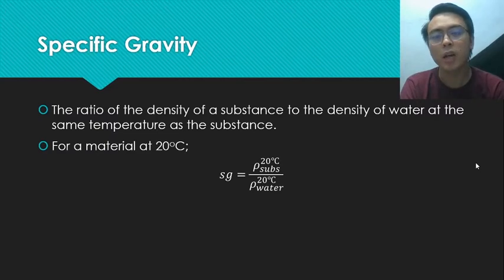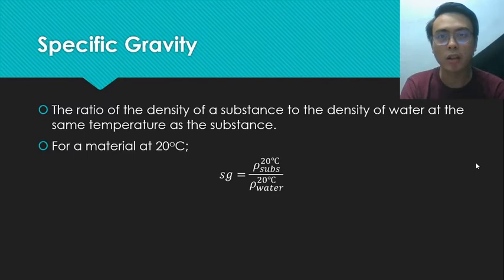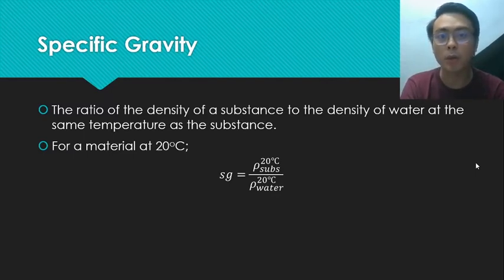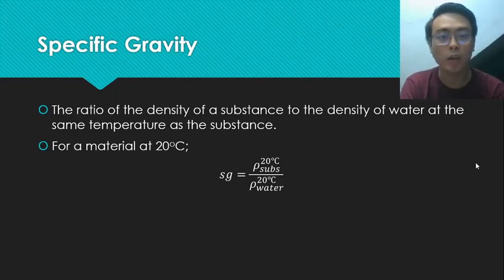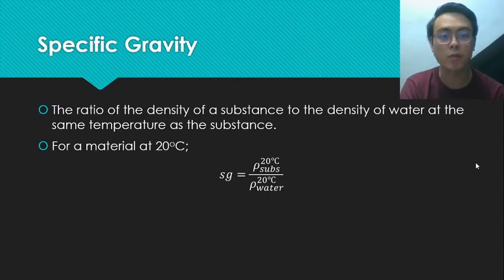The confusion arises when switching units. If density is no longer in grams per cubic centimeter, the density of water is no longer 1, so specific gravity and density are no longer numerically equal. In English units, for example, the density of water is about 62.3 pounds per cubic foot. Just remember the definition of specific gravity.